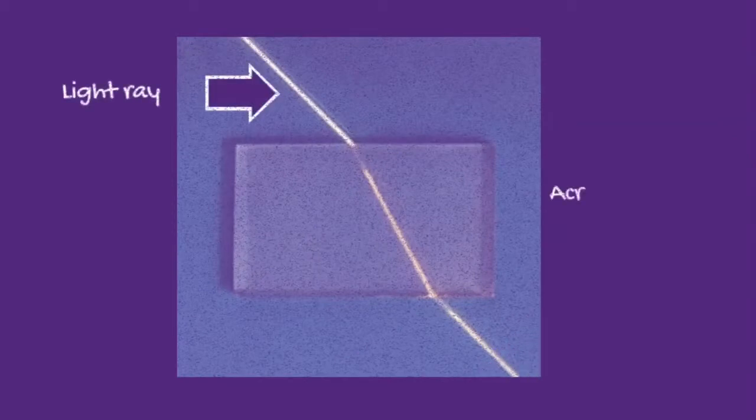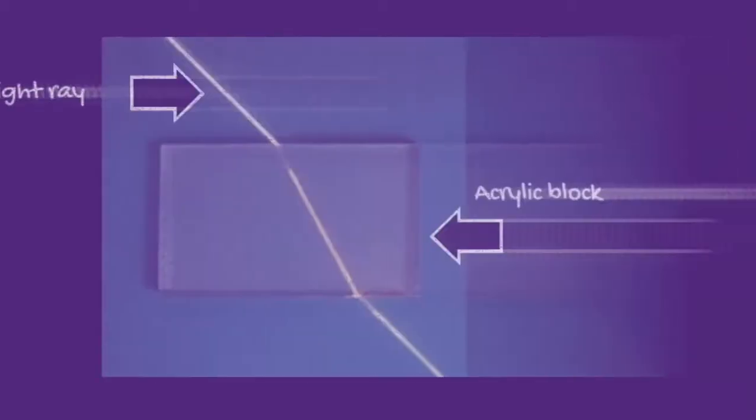This activity will help show how light bends as it passes through an acrylic block, a material with a higher density than air.